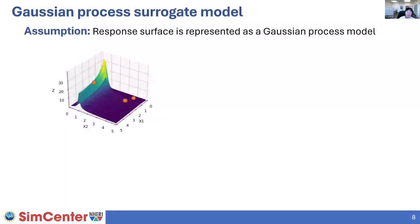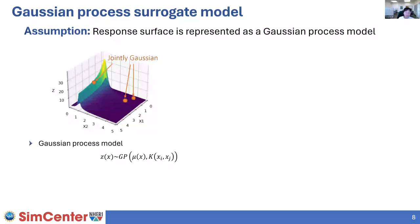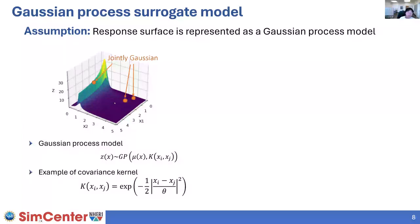For those not very familiar with Gaussian process models, here is a one-page summary. In the Gaussian process modeling approach, we assume this regression surface is represented as a Gaussian process, meaning any points located on this surface are jointly Gaussian. There are mean and variance values that represent their relationship, and importantly, the correlation between points is assumed to depend on the distance between them — if two points are far apart, they will have low correlation, meaning their responses can be different.